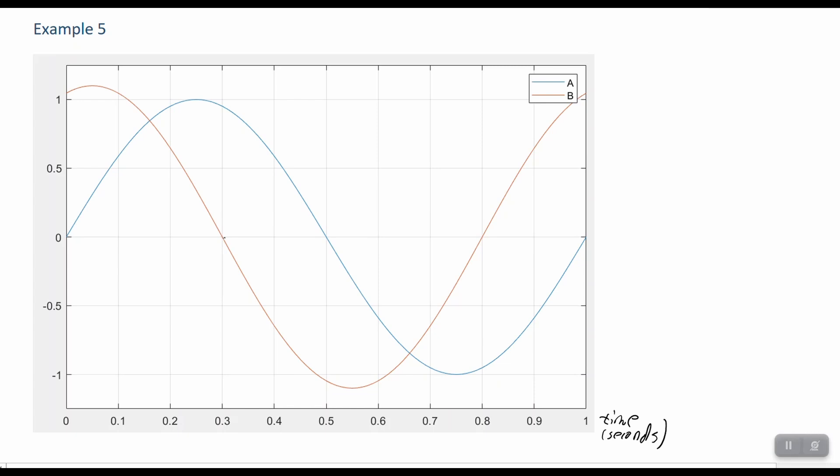So if we look at the point where they each cross the y equals zero line, it looks like this is at 0.3 for sinusoid B, and 0.5 for sinusoid A. So it looks like B is leading A by 0.2 seconds. But that doesn't tell us what the equation would need to be for these sinusoids.